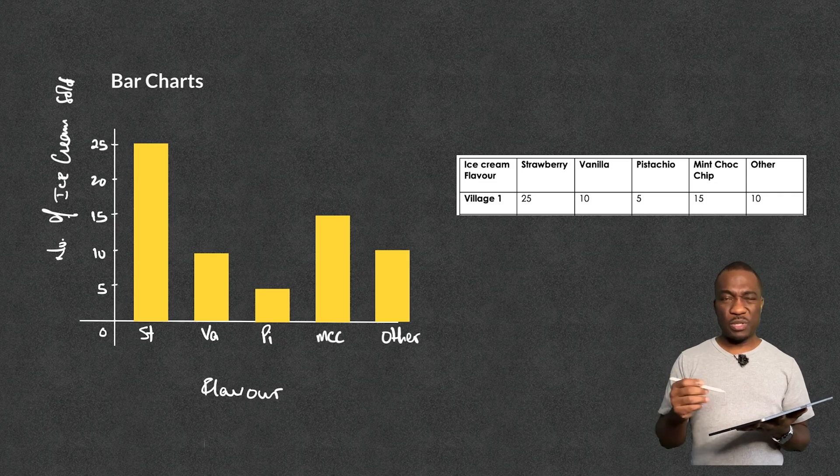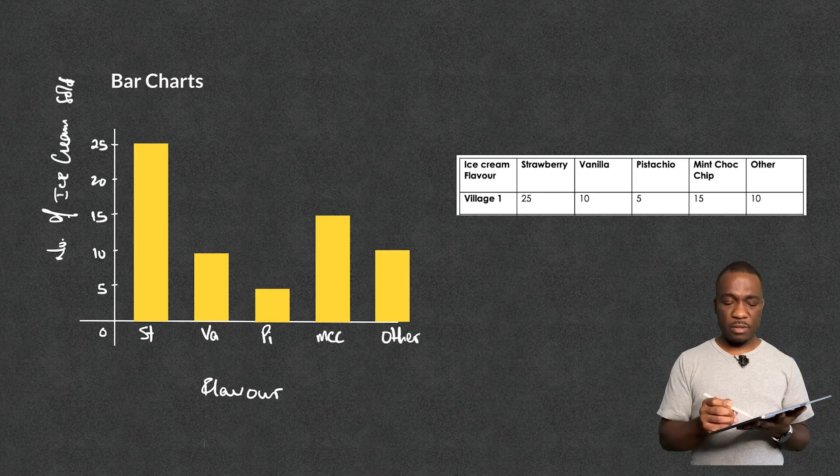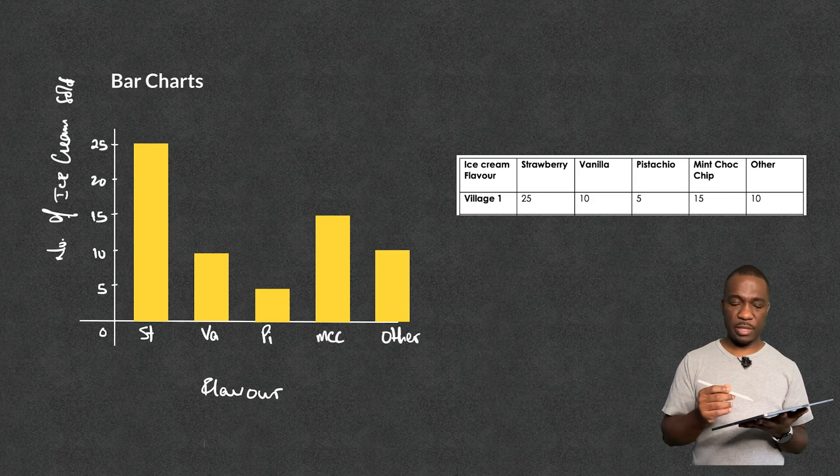Now the miscellaneous ones, I'm not too bothered about. I'm not going to lose customers. Not very many customers are buying pistachio, but there's just that one or two that's buying pistachio. What does that mean for me then?